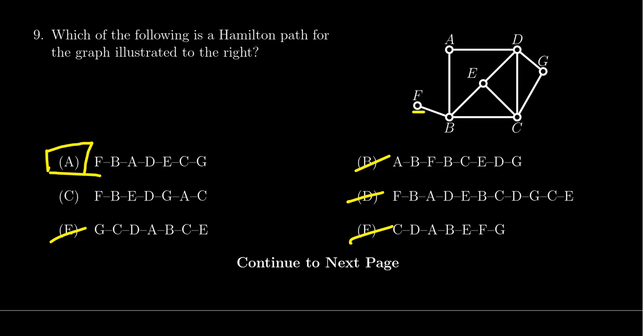But just for the sake of completeness, let's look at choice C and see why that one didn't work. You go from F to B to E to D to G to A to C. You know, if you follow that, it looks like you use every vertex exactly once, it's tempting to think that's a Hamilton path, but you're utilizing edges that don't exist in the graph. So that is not a Hamilton path.